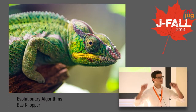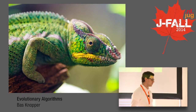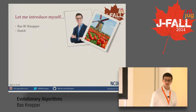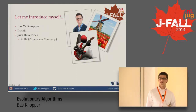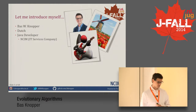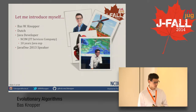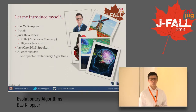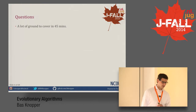Evolution has some really powerful and amazing mechanics that make it such a powerful algorithm, if you will, and that's what we're going to talk about today. But before we do that, let me introduce myself. I am Bas Knopper, I'm Dutch, I'm a Java developer working for NCIM Group, which is an IT services company based in the Netherlands. I have about 10 years of Java experience and I'm an AI enthusiast with a soft spot for evolutionary algorithms.